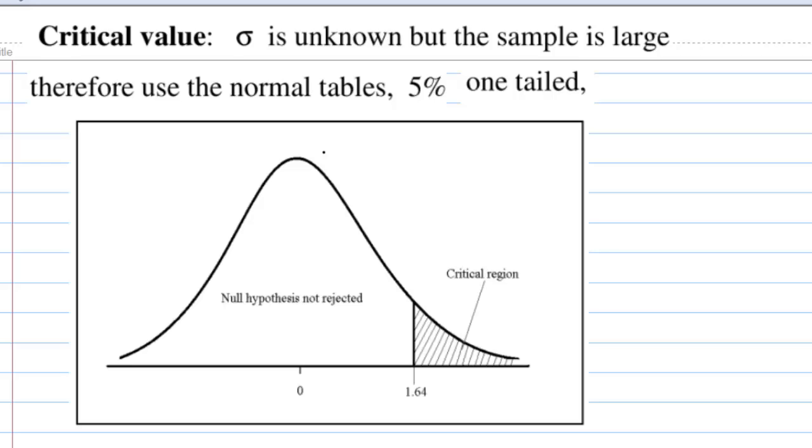To find the critical value from the table, sigma, the population standard deviation, is unknown, but the sample size is large since n is greater than 30. Therefore, we can use a standard normal table. 5% on one-tail, which means this area has to be 5%. And the critical value, we find out, is 1.64.